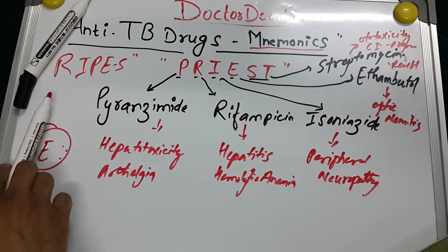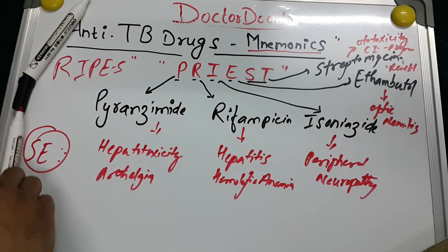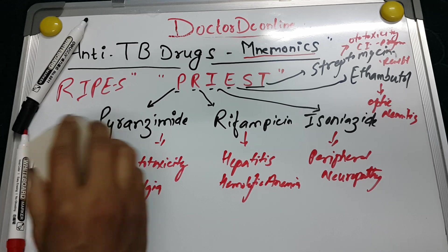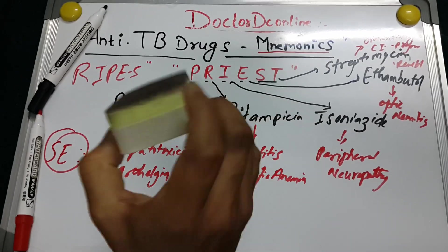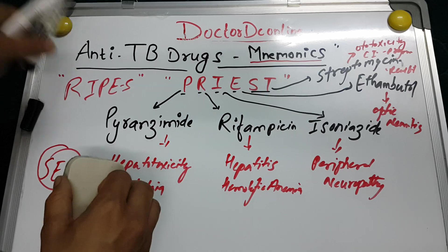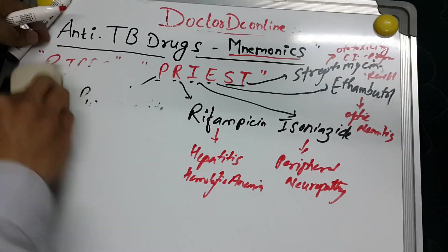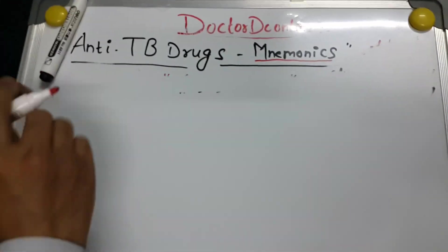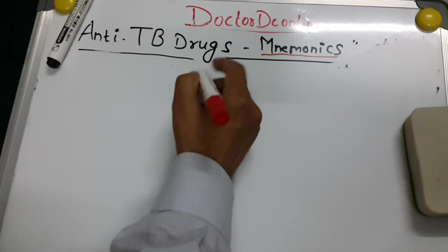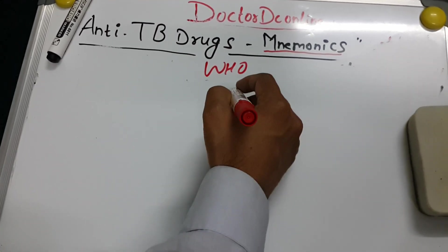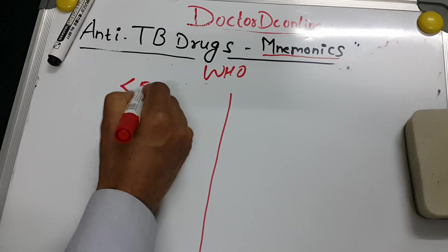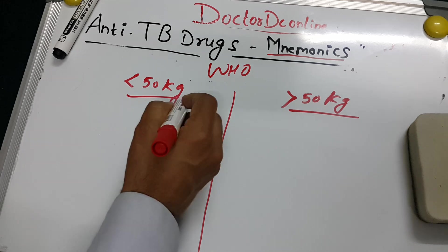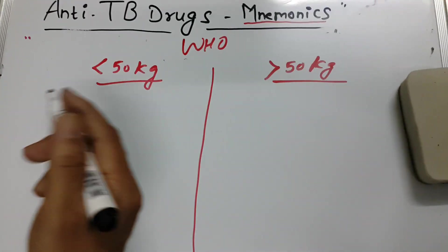Now let's go to doses. These WHO-recommended doses are very important and tricky. According to WHO recommendations, patients are divided into two weight groups: less than 50 kg and more than 50 kg.